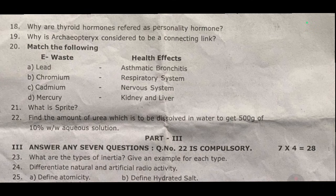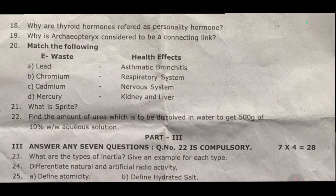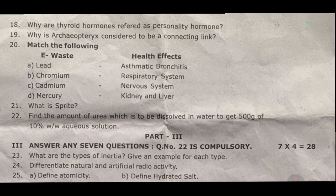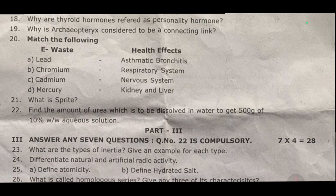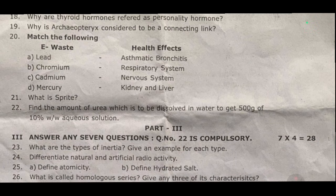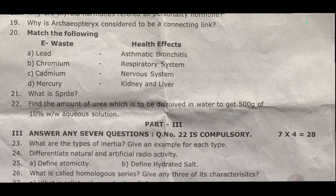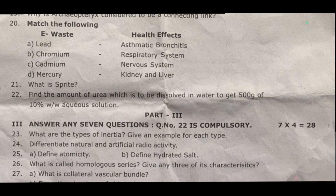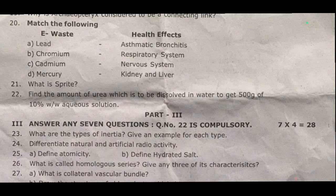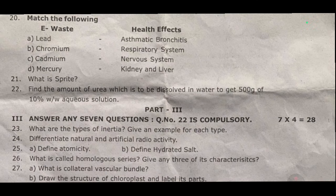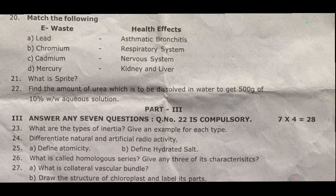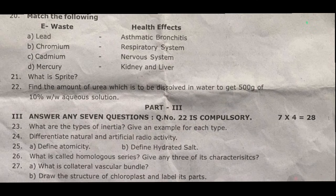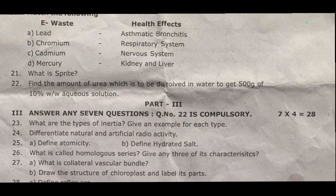Twenty-three: what are the three types of inertia? Give an example for each type — most important repeated question, compulsory. Twenty-four: differentiate natural and artificial radioactivity. Twenty-five: define atomicity; also define hydrated salt. Twenty-six: what is called a homologous series? Give any three of its characteristics.